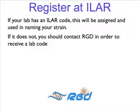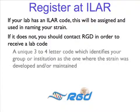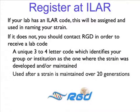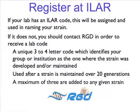This code will be assigned and used for naming all strains which your group or institution develops. It is a 3–4 letter code that identifies your group as the one where the strain was developed and/or maintained. It is added to the strain symbol after the strain has been maintained at a facility for more than 20 generations. A maximum of 3 ILR codes can be added to a given strain symbol. We encourage all our users to register their labs at ILR and get an ILR code, as it ensures proper recognition of your research group.